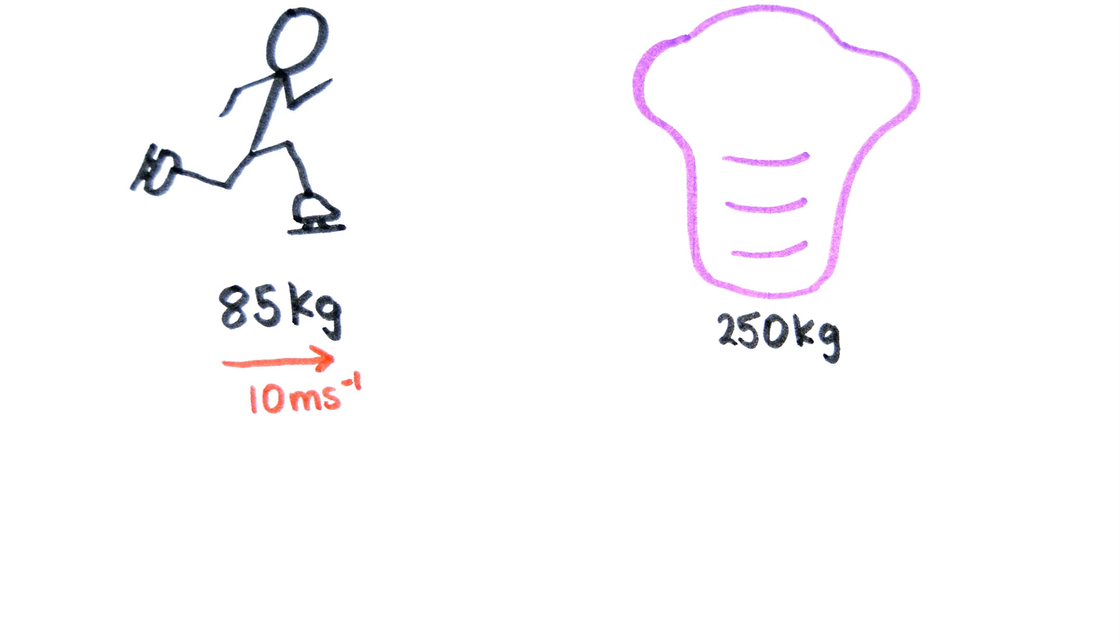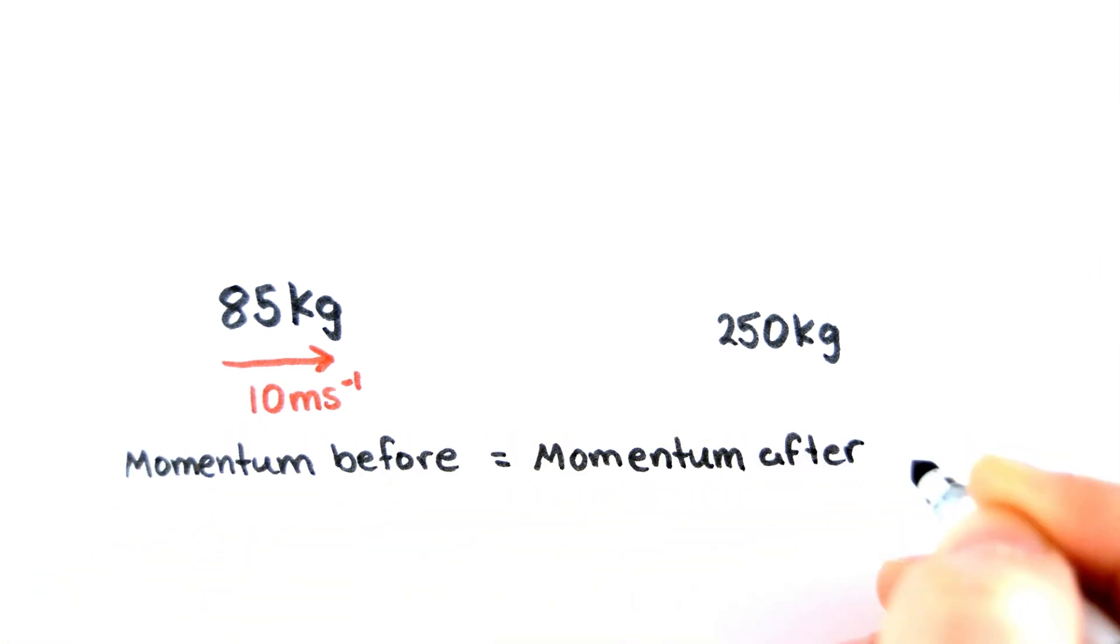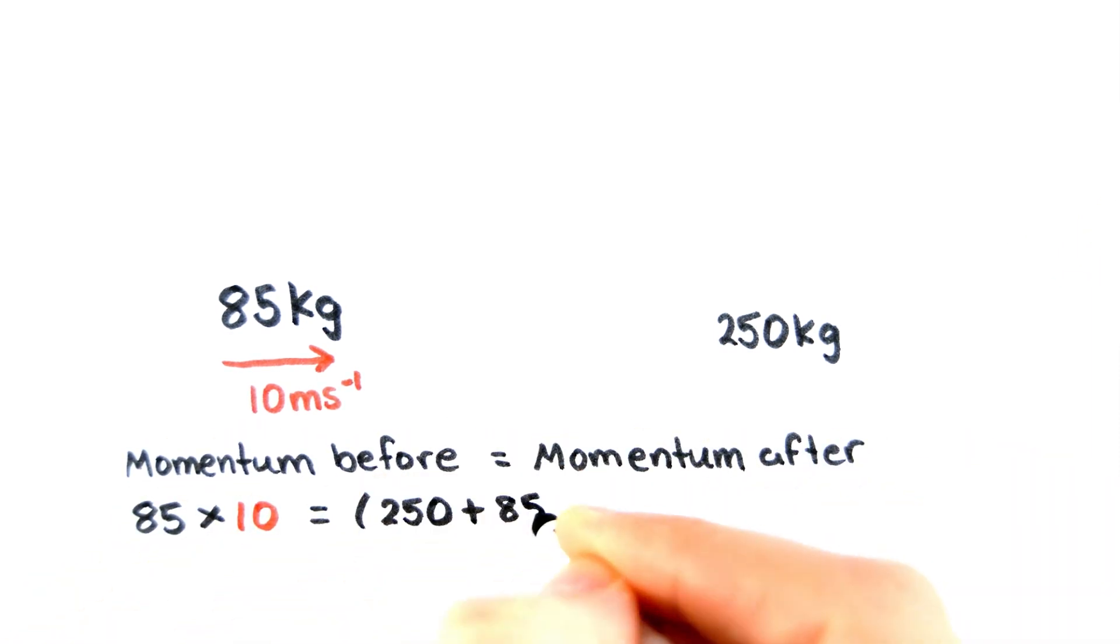Since the dummy is covered in glue, the hockey player and the dummy both move off together. Using the fact that momentum before equals momentum after, we can calculate the velocity of the combination to be 2.54 meters per second.